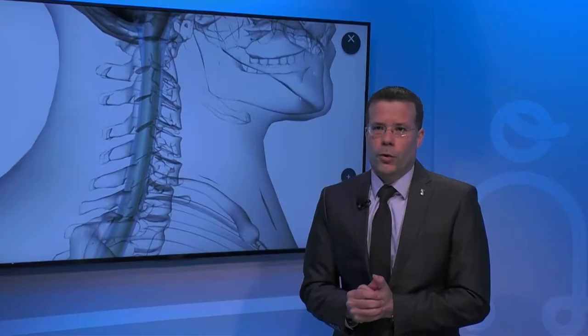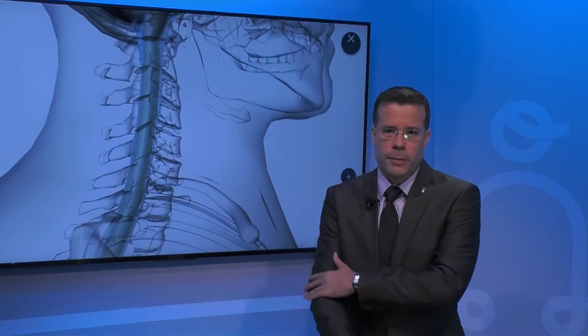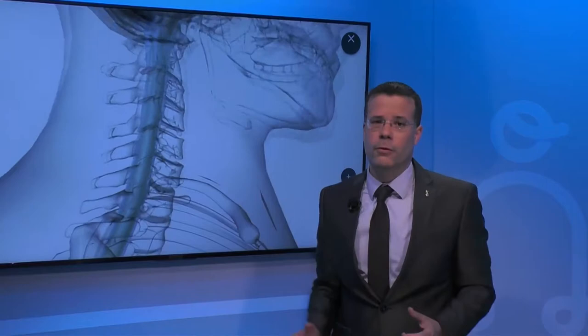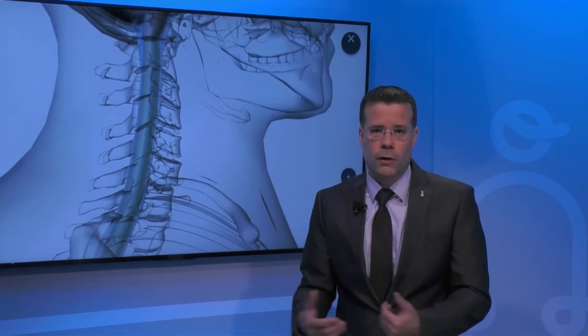The most common neck symptoms are obviously pain in the neck. If a nerve is involved, people might have pain going down the arms along with numbness and tingling. Some people might have referred pain to the head — what we call cervicogenic headaches, or headaches coming from the cervical spine. If it becomes severe enough, the spinal cord can get compressed, causing overall muscle weakness or difficulty with walking, bowel, and bladder.